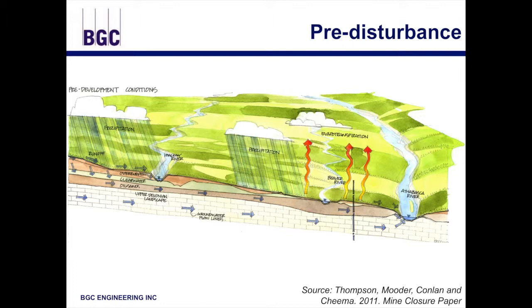Another pillar of the landform design is really understanding the pre-disturbance condition, which gets back to looking at things at a landscape level and setting the landform within a landscape context. In terms of hydrology, this means understanding the regional drainage scheme, where outlets can connect with natural receiving bodies, and what the dominant hydrologic controls are. For groundwater, this involves understanding the regional and local flow paths that exist for the site. This is from work that BGC and Syncrude did for the Mine 2011 Closure Conference — setting up a site-wide groundwater model and using that to frame some of the closure planning work.